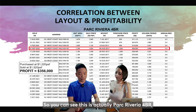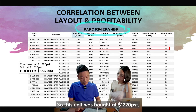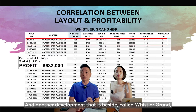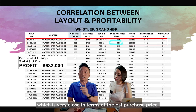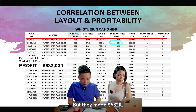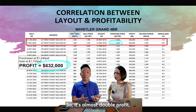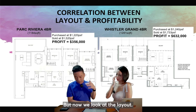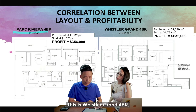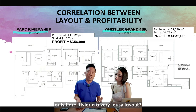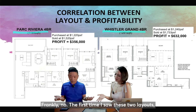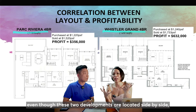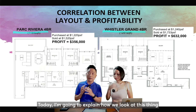Let's look at a real example. Park Riviera, four-bedroom in West Coast, was bought at $1,220 psf, making a total profit of $356,000. Right beside it, Whistler Grand — bought at $1,240 psf, very close in purchase price — made $632,000 profit. That's almost double, same location. Both layouts look decent; neither seems obviously bad. So why such a drastic difference in profit?